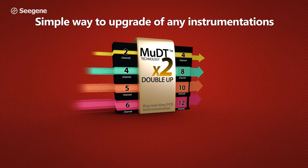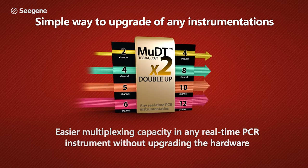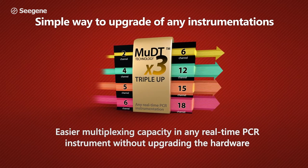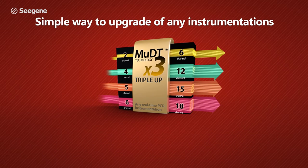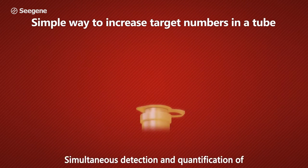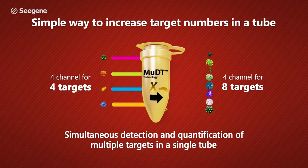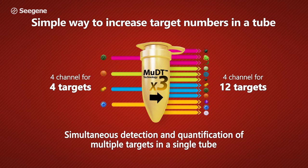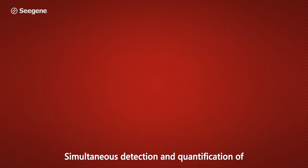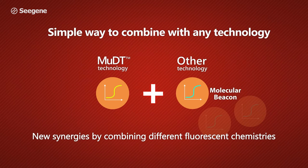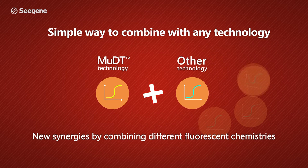MUDT increases the multiplexing capability of any existing real-time PCR instrument without requiring new hardware. MUDT increases the target numbers in a tube up to three times while still providing superior quantitative CT information. MUDT works with any fluorescent chemistry, which can open new possibilities for the molecular diagnostic industry.